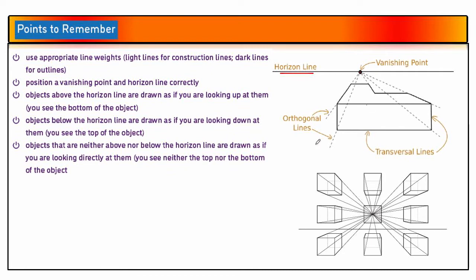A few points to remember: there are light lines called construction lines, also known as orthogonal lines, that guide you towards the vanishing point. Transversal lines help you create the actual 3D object. Again, if the object is above the horizon line it is a floating object, whereas if it is below the horizon line it is an object on the ground.